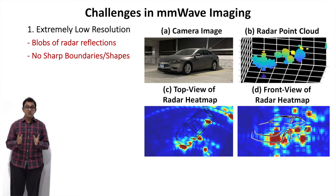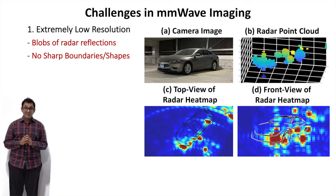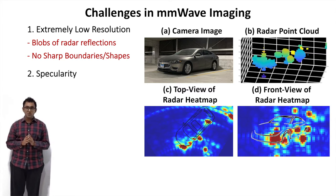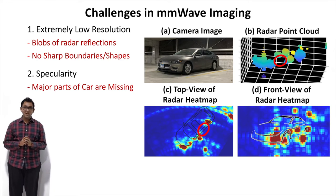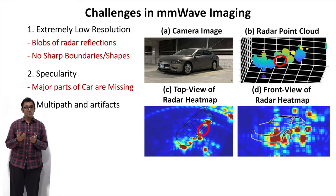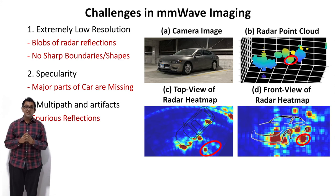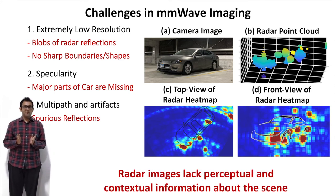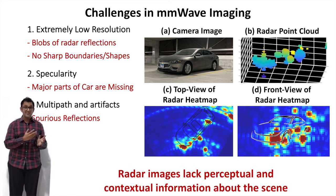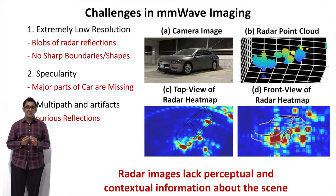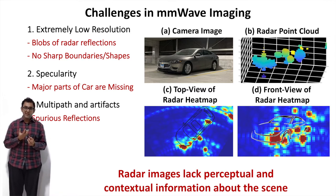Additionally, low resolution is not the only reason why imaging is hard. Specularity is a big problem too — portions of the car do not reflect signals back to the radar receiver, so some chunks of the car are just missing. The third problem is multipath and artifacts, which lead to ghost reflections as you can see here. So clearly imaging with millimeter wave radars is not easy, but the information is there in the radar image — we just need to know how to extract it into something more meaningful.